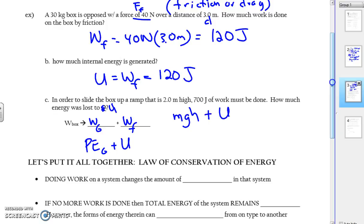So we know that our total work is 700. So we have 700 equals our mgh plus U. We don't know U, so it's not the same U as the prior problem. So what is our mgh? We're going to say m is, we already know that mg is 40 newtons. The height is 2 meters.